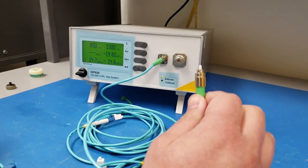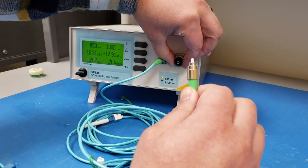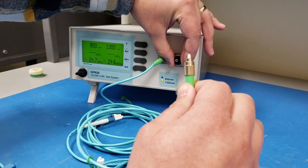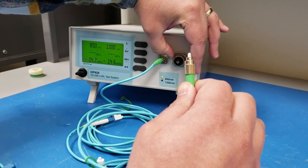So because I have an unlike connector here which is an APC 2.5 millimeter ferrule, I need to change out the adapter here from the 1.25 to the 2.5 millimeter ferrule adapter.